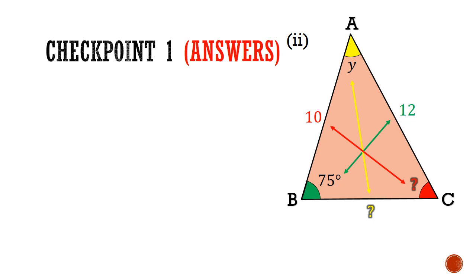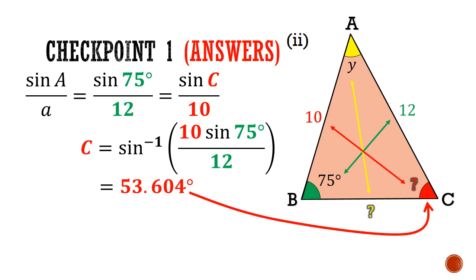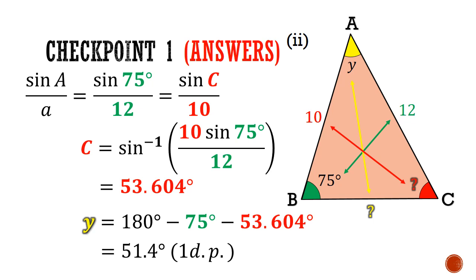Substituting the known values into the sine rule, we can make sine C the subject first. Then we can find the value of angle C by taking inverse sine of 10 sine 75 over 12. This will give us a value of 53.6 degrees. Bear in mind that sometimes an obtuse angle solution may exist here. But this is impossible in this case, because the angles will exceed 180 degrees for this triangle. Angle Y can then be discovered by using the sum of angles in a triangle and this will give us an answer of 51.4 degrees.